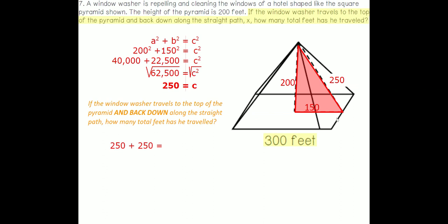So that means if he goes up, he travels 250. If he travels down, that's another 250. So that's 250 plus 250, which equals 500 feet.